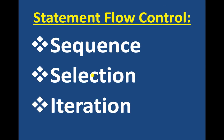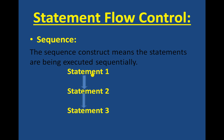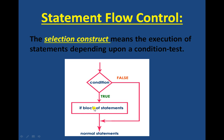Now, statement flow control. There are three parts: sequence, selection, and iteration. The sequence construct means statements are executed sequentially — first statement 1 executes, then statement 2, then statement 3. Next is the selection construct, which means execution of statements depends upon a condition test. If the condition is true, the block of statements will execute. If the condition is false, it will not go into the loop and will jump to the normal statements.